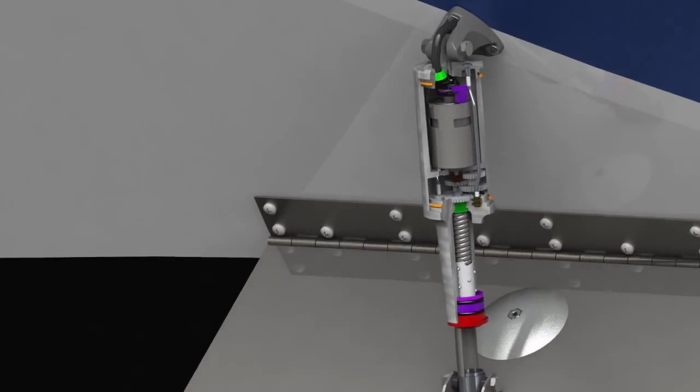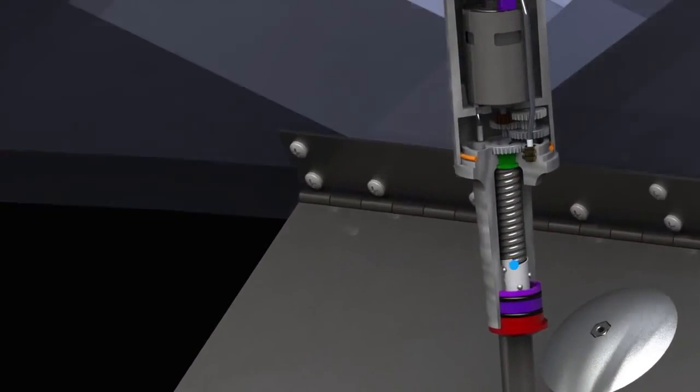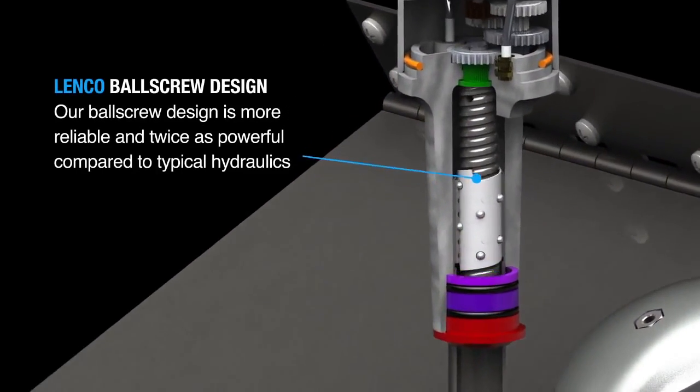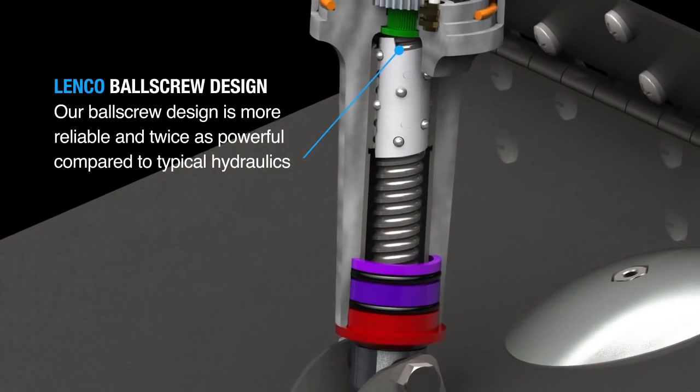But there are many other features that make the Lenko Actuator as good as it is. Its ball screw design is more reliable and twice as powerful compared to typical hydraulics.